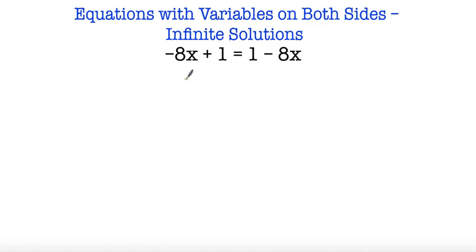Here I have negative 8x plus 1 is equal to 1 minus 8x. If I wanted to start solving this equation I could either move my variables or move my constants. For right now I'm going to move my constants, so I'm going to subtract 1 on both sides.